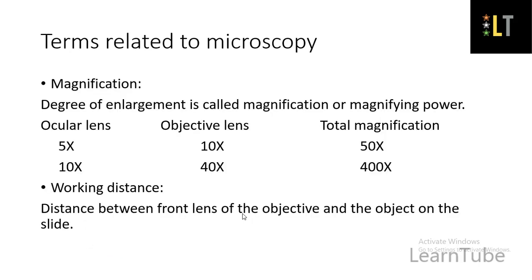Now we will move on to the terminologies related to microscopy. First is magnification — the degree of enlargement is called magnification or magnifying power. Total magnification can be calculated by multiplying the power of the ocular lens with the objective lens. For example, if the ocular lens is 5x and the objective lens is 10x, the total magnification is 50x — meaning the image appears 50 times larger than the original specimen.